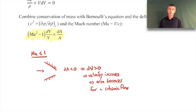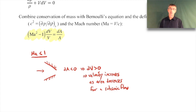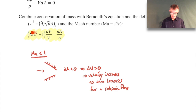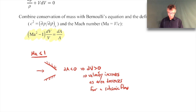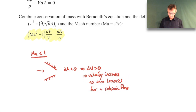An incompressible flow is just an extreme case of a subsonic flow - it's one where the Mach number is zero because the speed of sound is infinite in an incompressible flow. So if you plug in M = 0, the quantity in parentheses is just minus one, which is negative - same behavior. This statement is true whether the flow is incompressible or just subsonic.